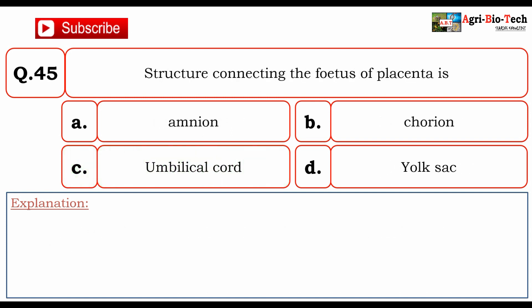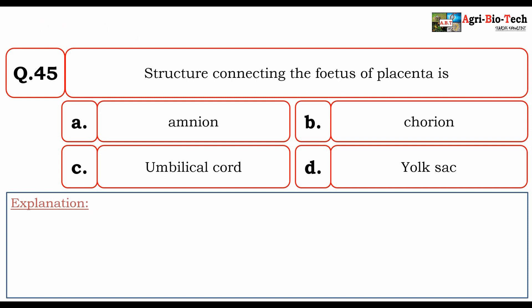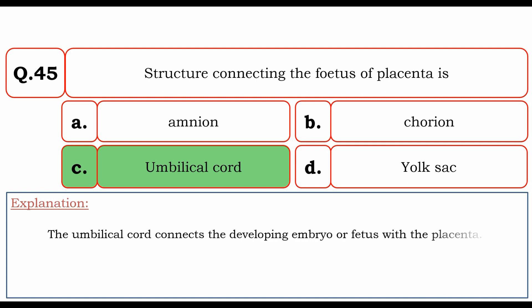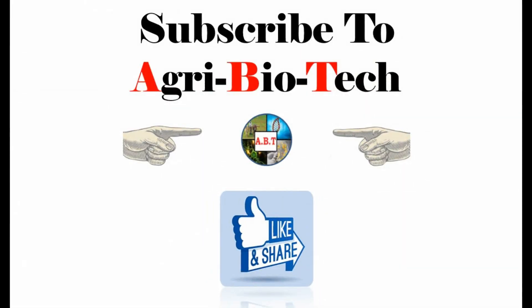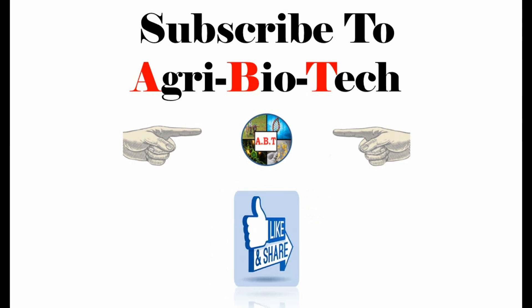The last question: the structure connecting the fetus to the placenta is — A) amnion, B) chorion, C) umbilical cord, or D) yolk sac. The correct option is C) umbilical cord. The umbilical cord connects the developing embryo or fetus with the placenta. Thanks for watching — please like and share this video. For any suggestions, comment in the comment box, and don't forget to subscribe to our channel AgriBiotech. Thank you.